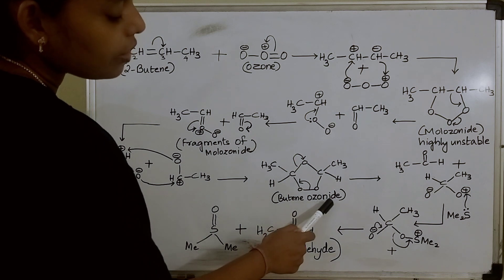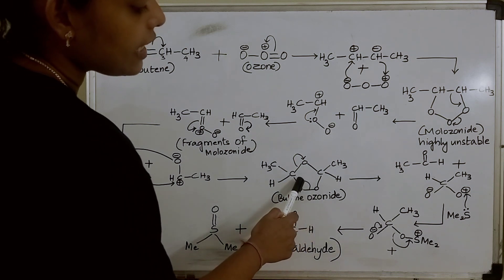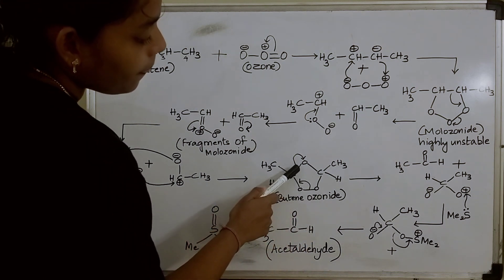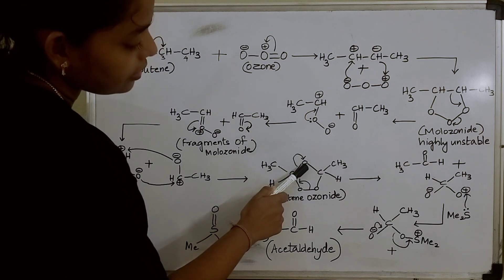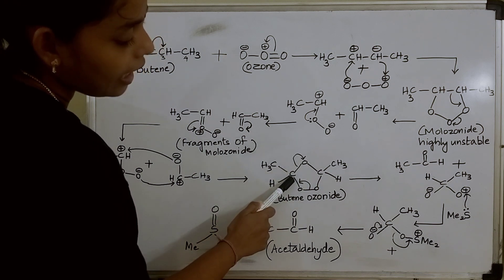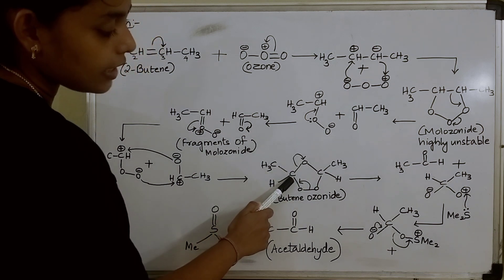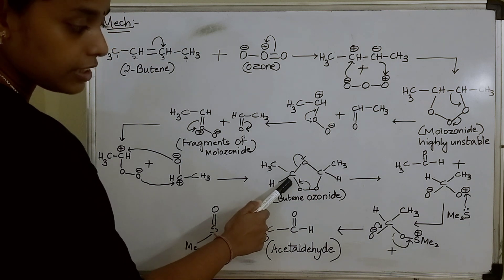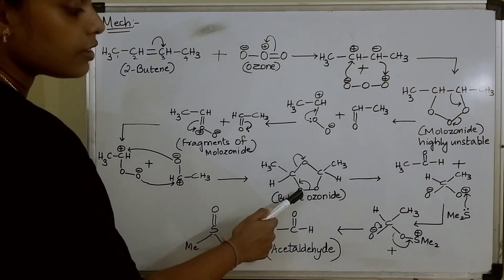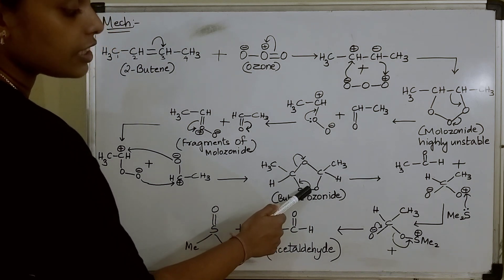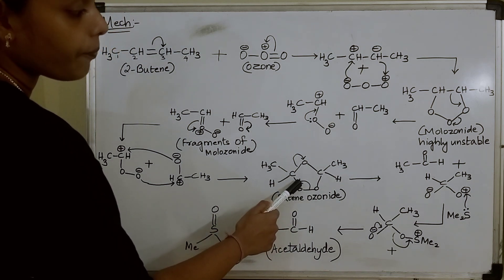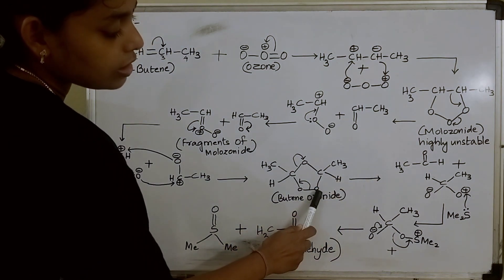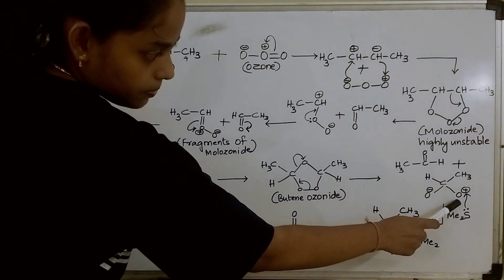In butene ozonide, bond dissociation takes place where this bond is shifted to oxygen, leaving carbon positively charged. As this carbon is having a positive charge, the bond present between these two oxygens is shifted, giving us acetaldehyde, and this oxygen will get a positive charge.